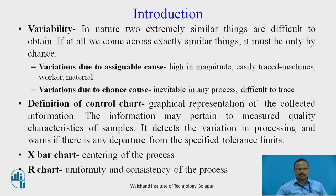Data is collected from machines, plotted on the control chart, and we determine whether the process is in control or not. There are two types of charts under the variable control chart: the X-bar chart and the R chart. The X-bar chart represents the centering of the process — how much a dimension varies from the center. The R chart represents the uniformity and consistency of the process — whether the process is behaving at the center or not.